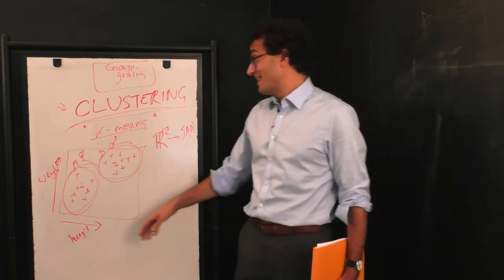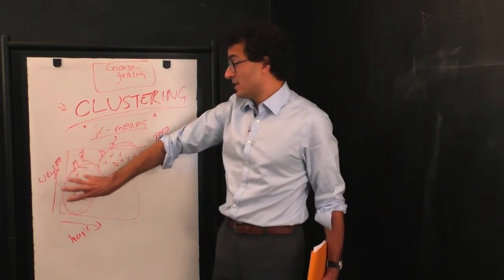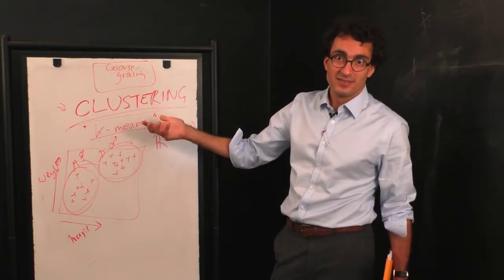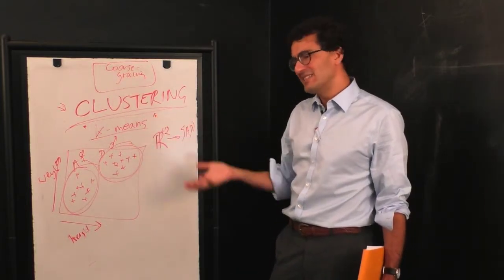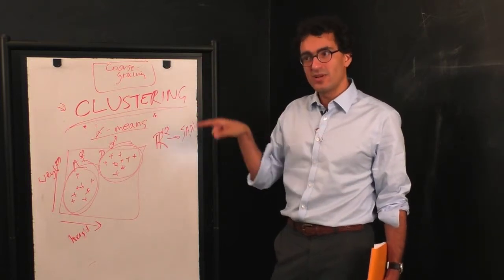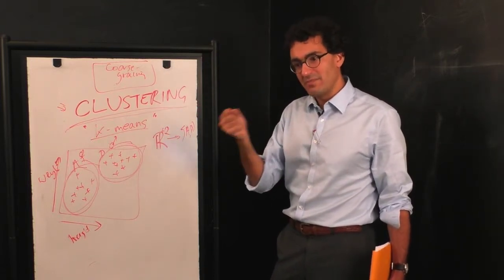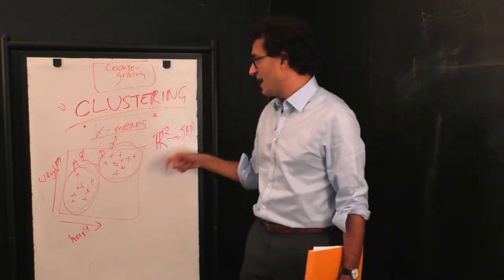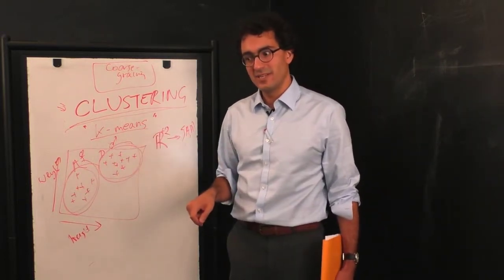You may have noticed, of course, that, in fact, k-means operates with a notion of closeness, just as the Alice in Wonderland coarse-graining did. In both cases, we were saying that things that were near each other should probably be described by a single description. All these points here get the description A, all these points here get the description B.